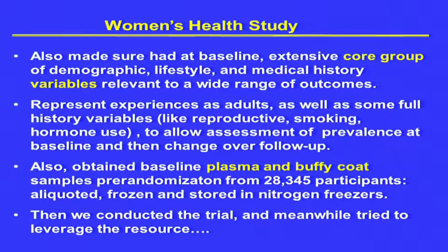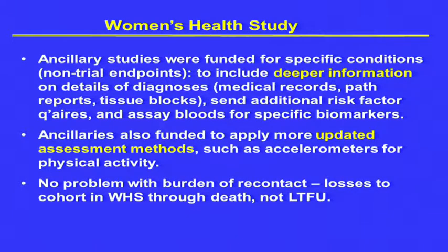We then conducted the trial and tried to leverage the resource. We did ancillary studies funded for specific conditions, through which we got deeper information — details of diagnoses from medical records, pathology reports, and tissue blocks. We sent out additional risk factor questionnaires and assayed bloods for specific biomarkers. We also updated our assessment methods, such as using accelerometers for physical activity, which we hadn't done before.